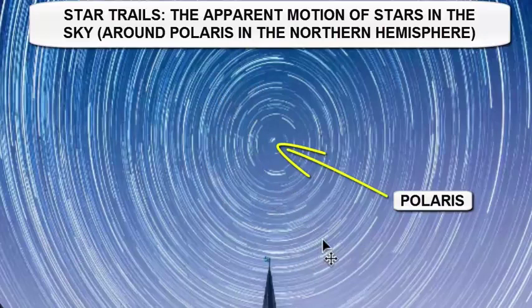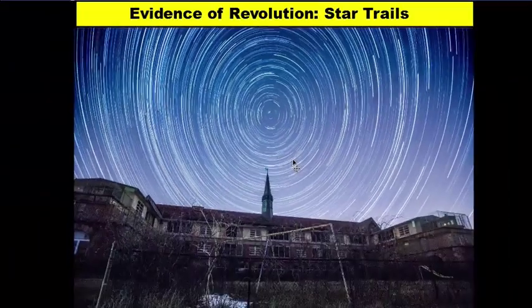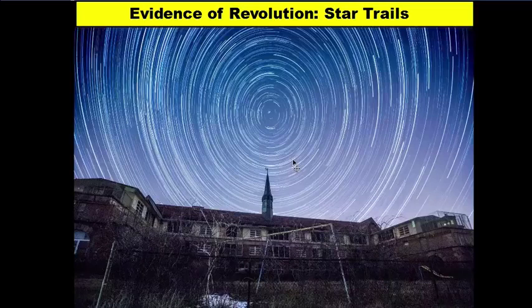Think of it this way: if you stand up and look at your ceiling and then rotate in place, your ceiling will appear to be spinning above you. But the room is not actually spinning — you are spinning underneath the ceiling. Your rotation in place gives the ceiling an apparent motion of rotation. That's the same thing that happens with earth — the stars don't rotate around us; it's the earth rotating underneath the sky, giving us those star trails.